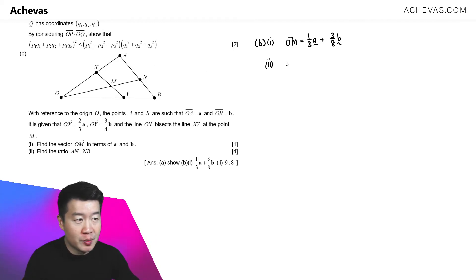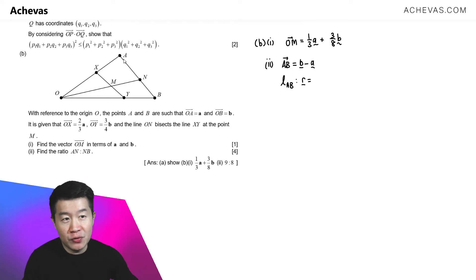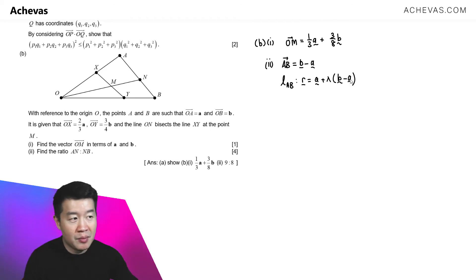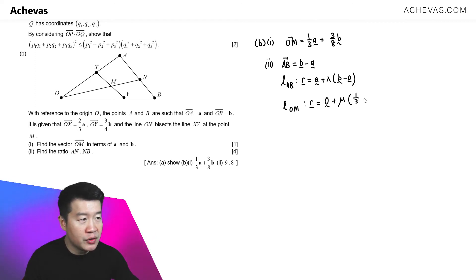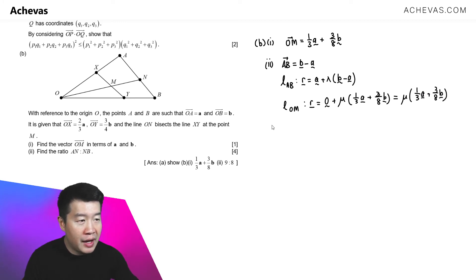The line through A and B is parallel to AB, which is B minus A. So the line is R equals A plus lambda times (B minus A). For the line through O, M, and N, since it passes through the origin, it is R equals mu times OM, where OM is (1/3)A plus (3/8)B from the previous part.